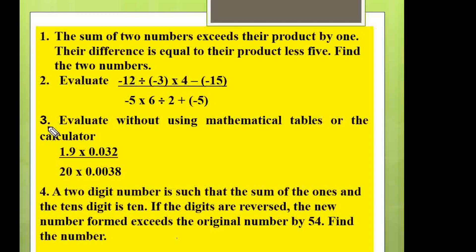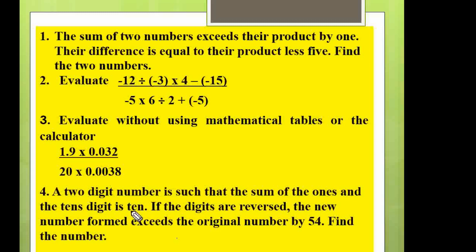Question number three: evaluate without using mathematical tables or a calculator — that is, 1.9 times 0.032, everything divided by 20 times 0.0038. Question number four: a two-digit number is such that the sum of the ones and the tens digit is 10; if the digits are reversed, the new number formed exceeds the original number by 54 — find the number.